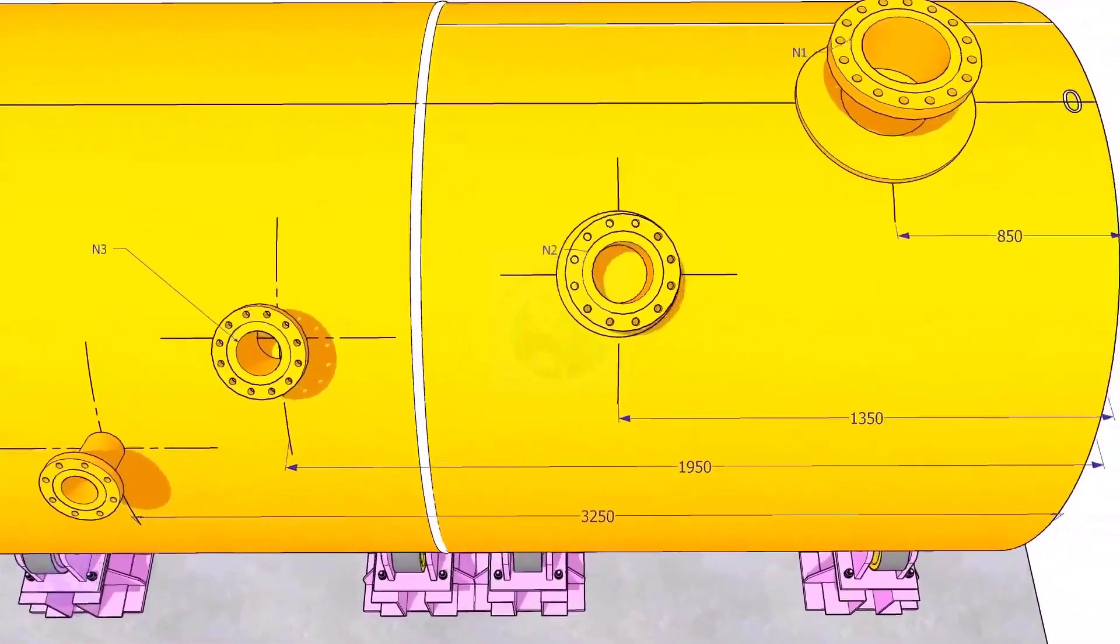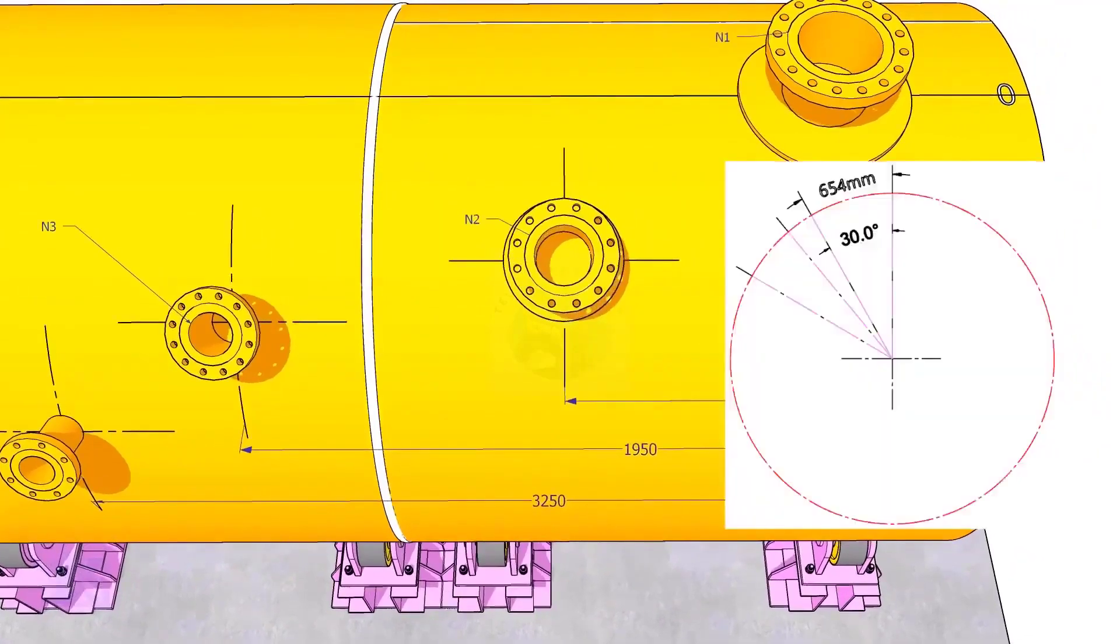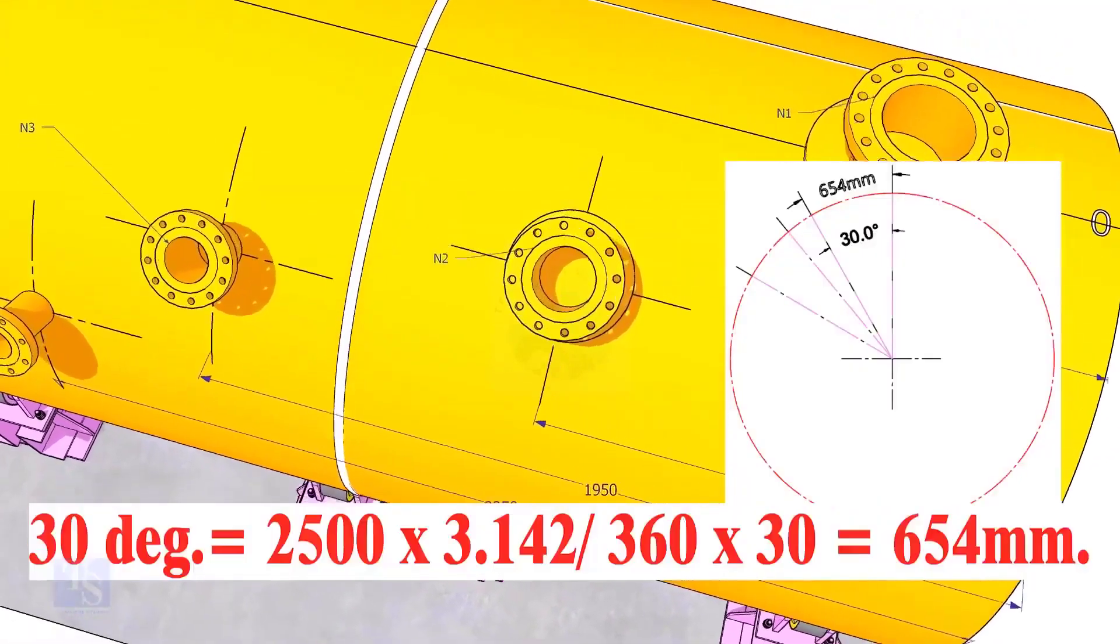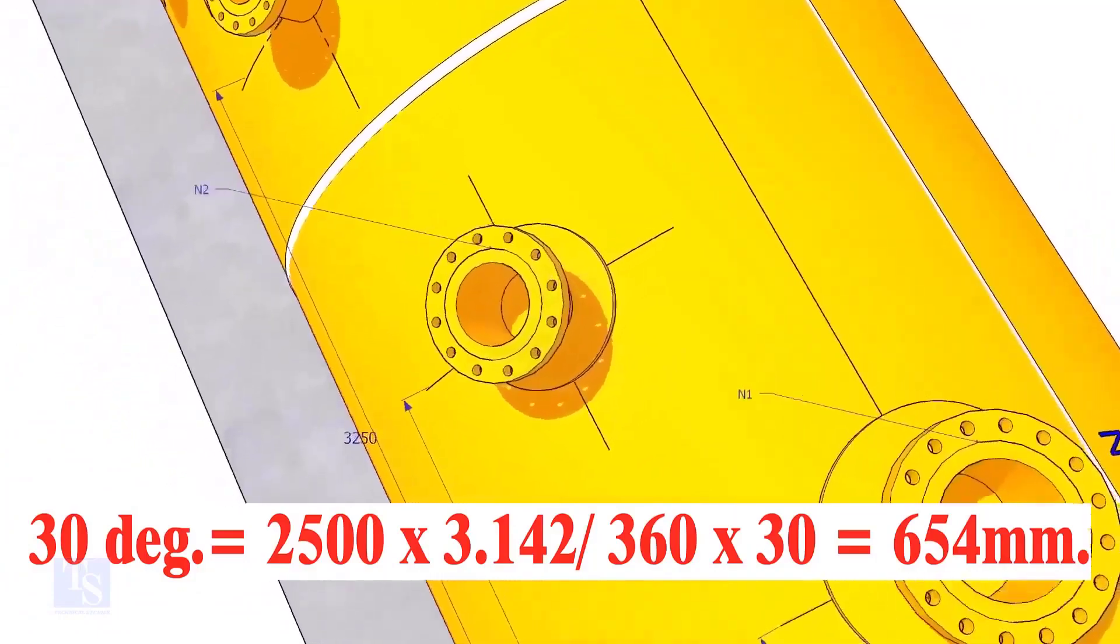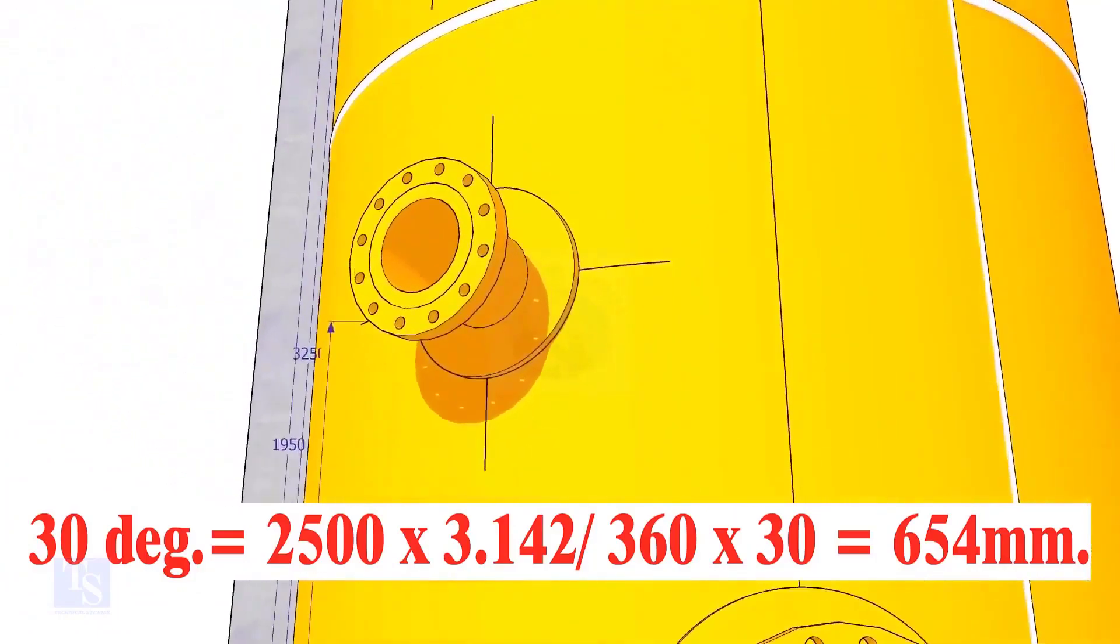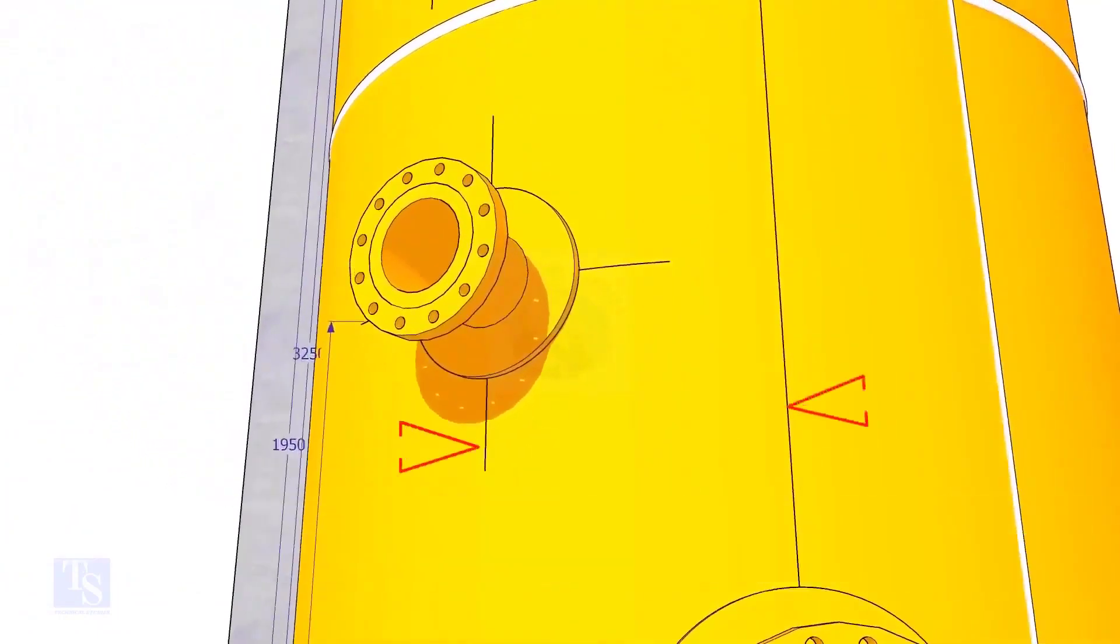Let us mark the center of nozzle N2. It comes on 30-degree anticlockwise. Convert 30-degree to arc length. Mark this dimension at two locations as shown, and draw a line.